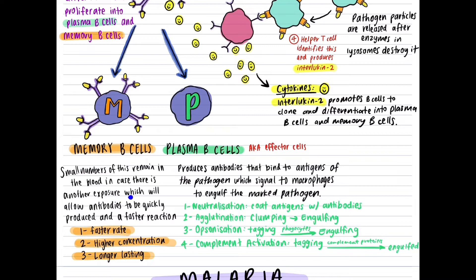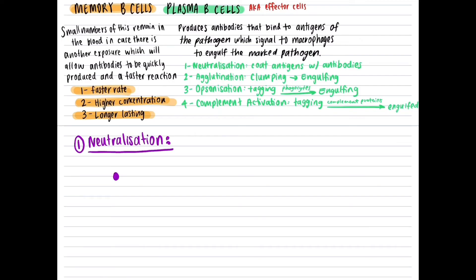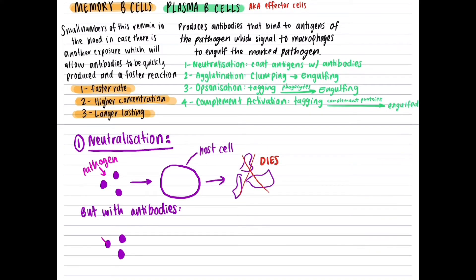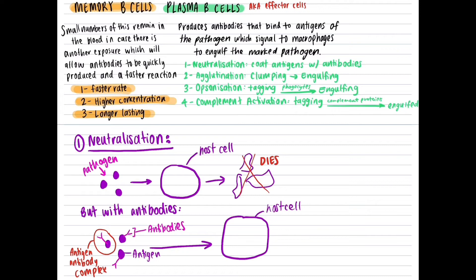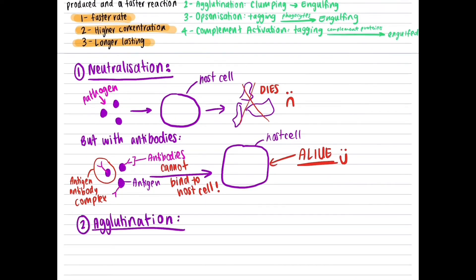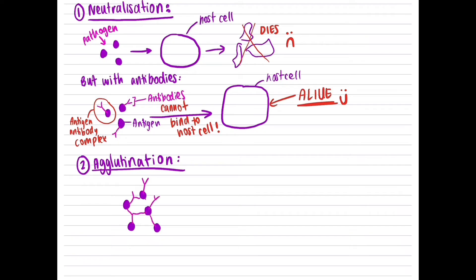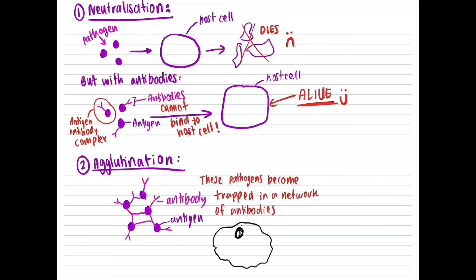It is important to note that antibodies do not destroy the pathogen directly, but only help the macrophage to engulf it more easily. Antibodies do this in four ways. One — neutralization: normally pathogens can bind to a healthy body cell and kill it, but with antibodies, they stick to the pathogen to form an antigen-antibody complex, which prevents it from binding to the host cell, allowing the cell to survive. Two — agglutination: antibodies clump the pathogen into a solid mass where pathogens become trapped in a network of antibodies, which is then engulfed by phagocytes, making it quicker to kill the pathogen.